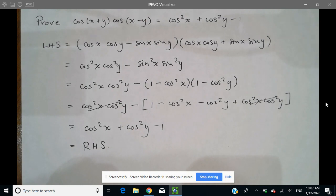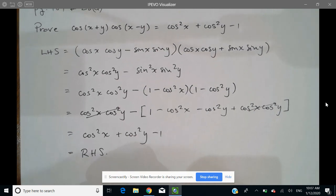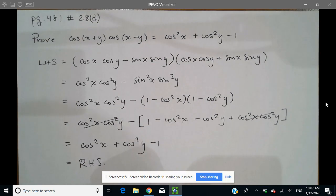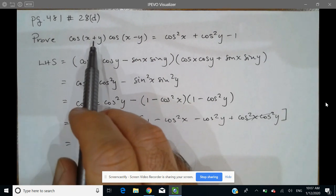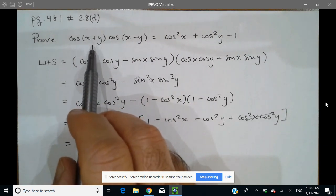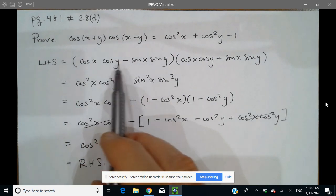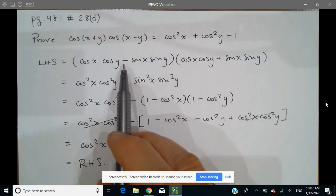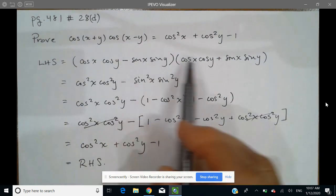And so our identity is proved. So just to recap here, I first recognize that the left-hand side offers more hope for manipulation. I do really the only thing I can do, which is apply the compound angle formulas.